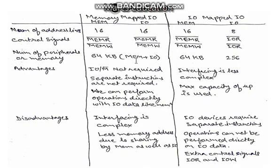Whereas the advantage of I/O mapped I/O is: interfacing is less complex because only 8 address lines are required. Max capacity of microprocessor is used because the 8085 can only address 64 KB of memory, but in this mode we can additionally use 256 locations for input-output devices.